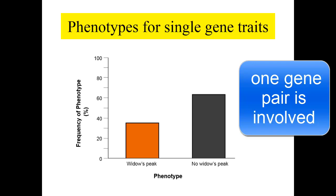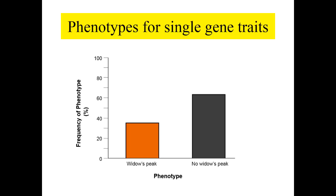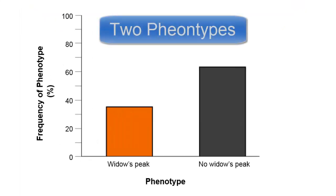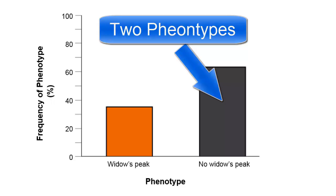This graph represents the frequency of the possible phenotypes. Notice there are only two phenotypes. In this case they're using Widow's Peak as an example of a single gene trait. There's either a Widow's Peak is present or no Widow's Peak is present — there are only two possible phenotypes.